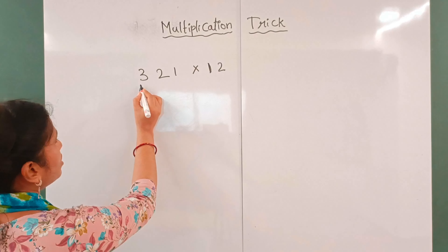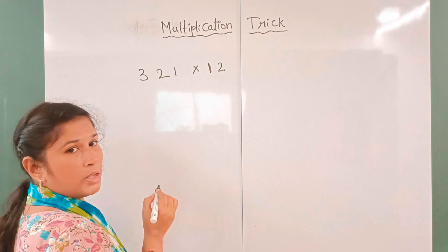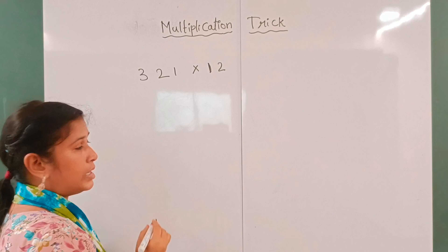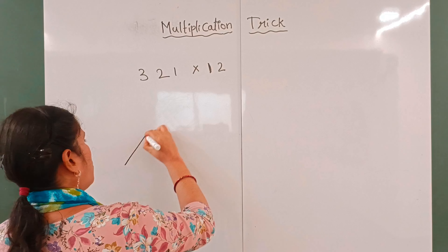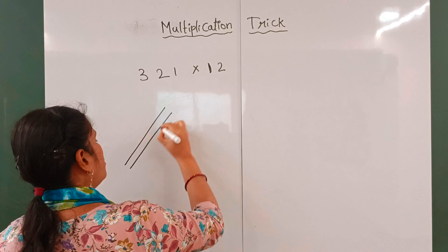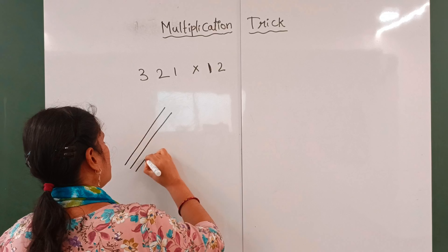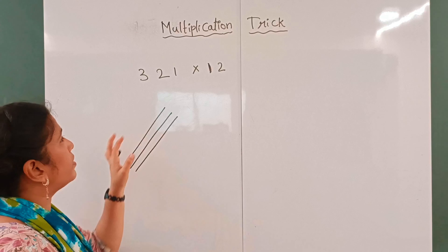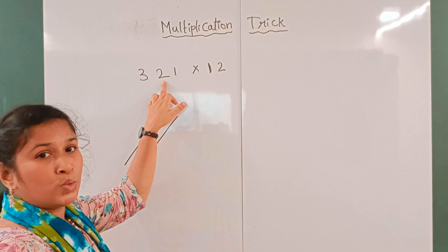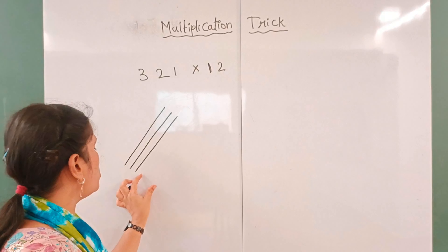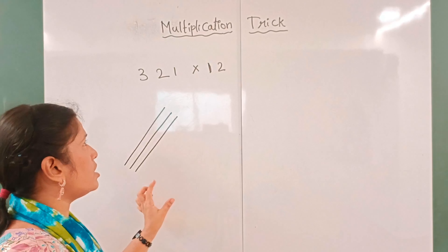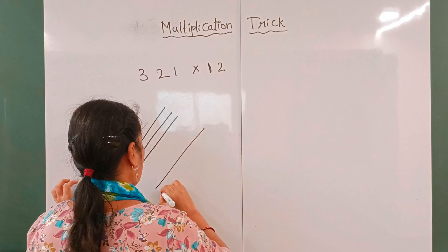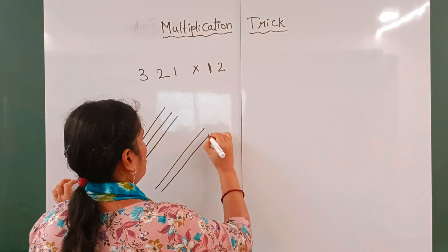We will show you 321. The first digit is 3, so here 3 lines will be drawn: 1, 2, 3. We have three lines. Next digit is 2, so after a little gap, two lines are drawn: 1, 2.